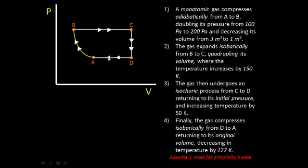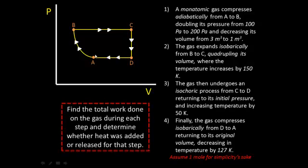Notice these white arrows on the graph represent the path of the cyclic process, going in a counterclockwise direction from A to B, B to C, C to D, and D to A. We're asked to find the total work done on the gas during each step — in step 1, step 2, step 3, and step 4.